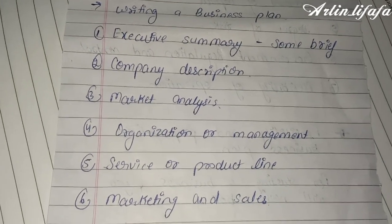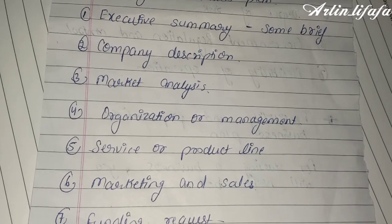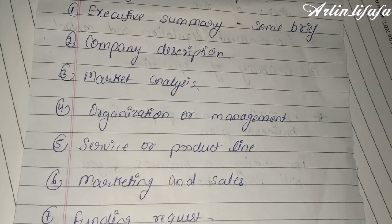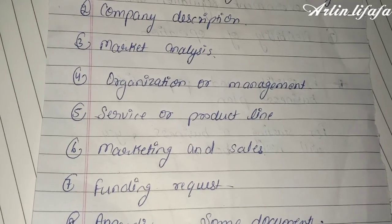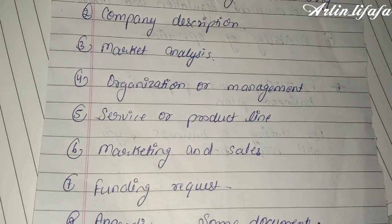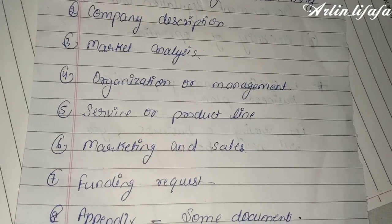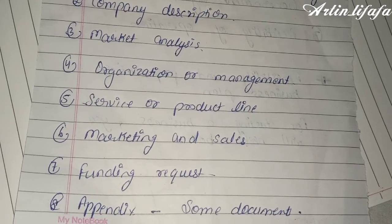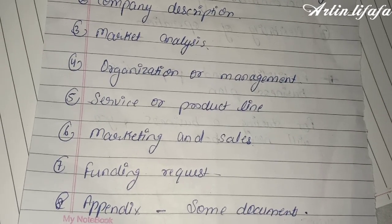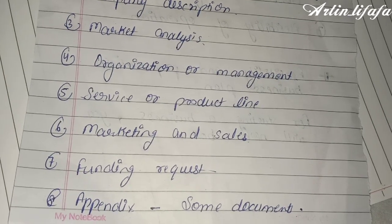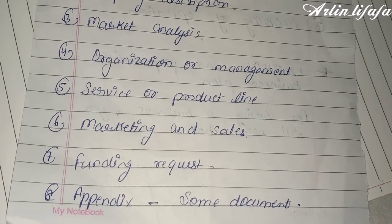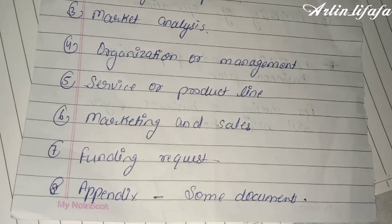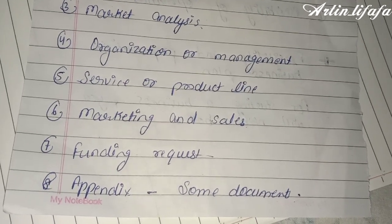The business plan includes: an executive summary with the vision and mission; a company description covering the company name and product; a market analysis covering company, product, and market value; organization management — the members and management structure; technology management structure; and the service or product details including the product launch.